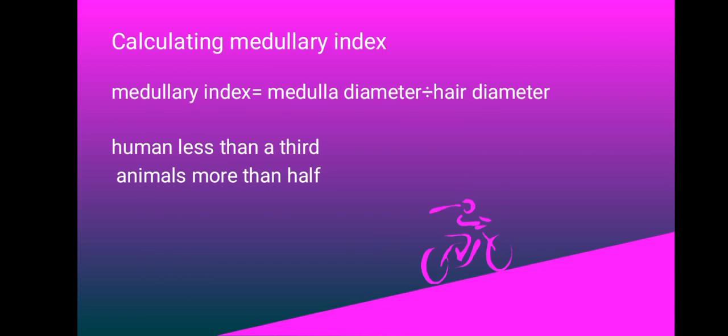We're going to look at calculating the medullary index. Medullary index is an important figure that is used in identifying whether hair found in a crime scene is human or animal. There's a difference between human hair and animal hair that can be seen through calculating the medullary index.